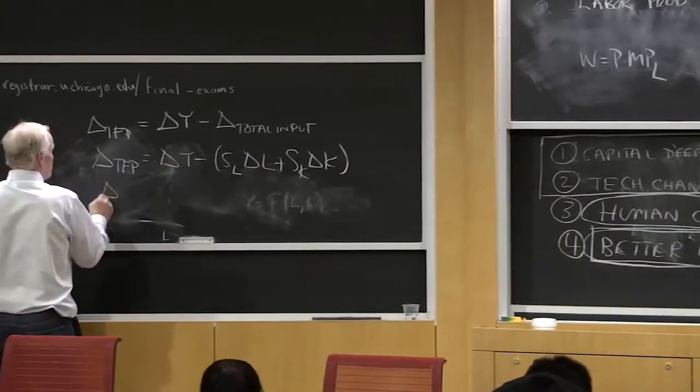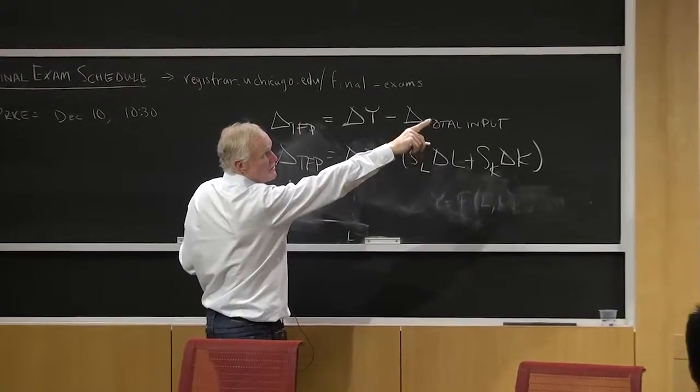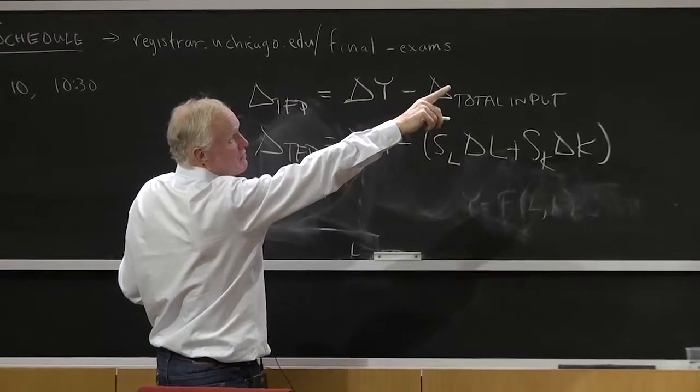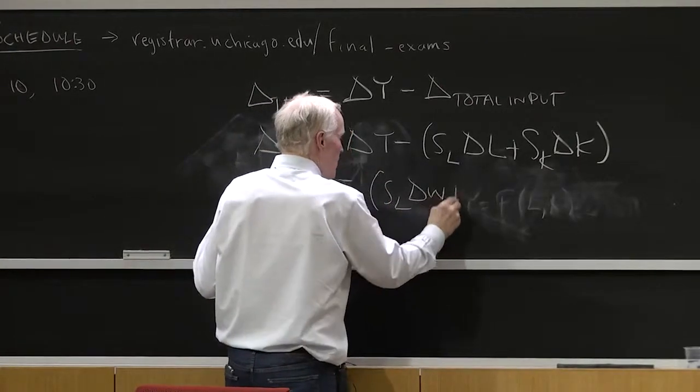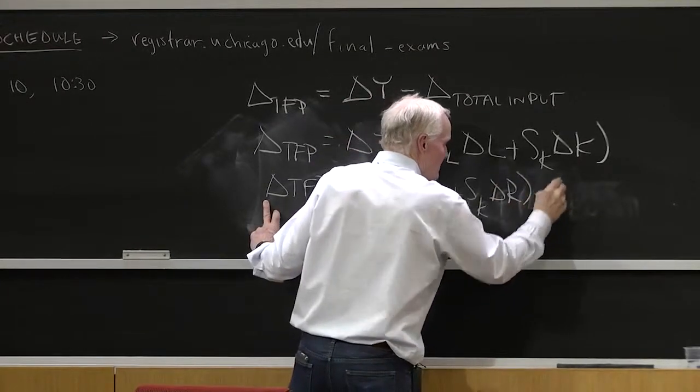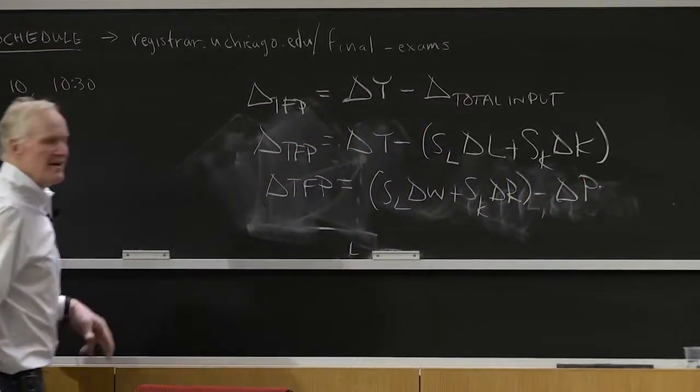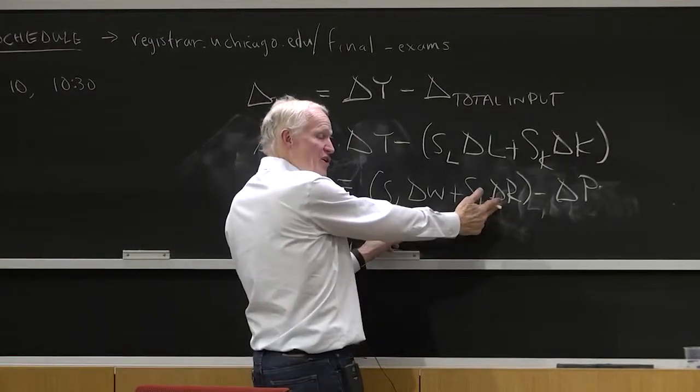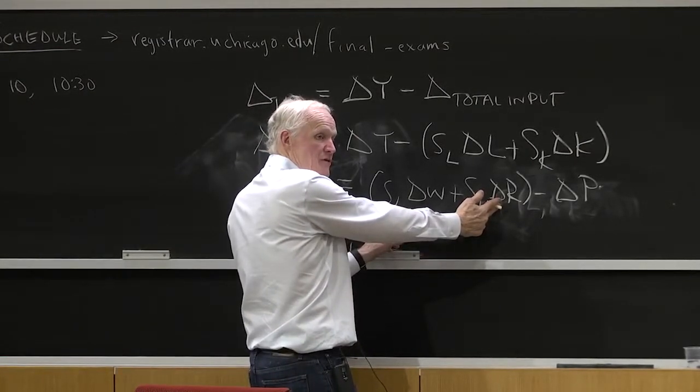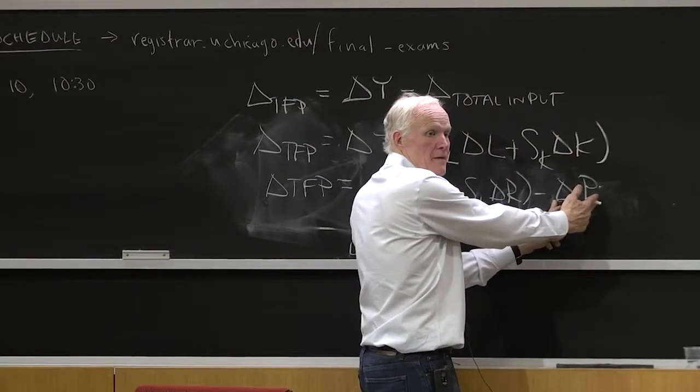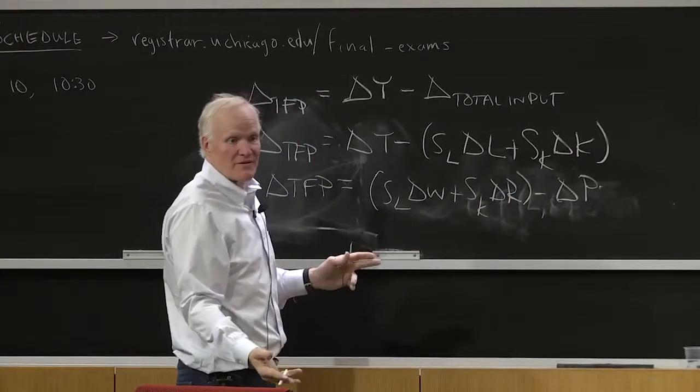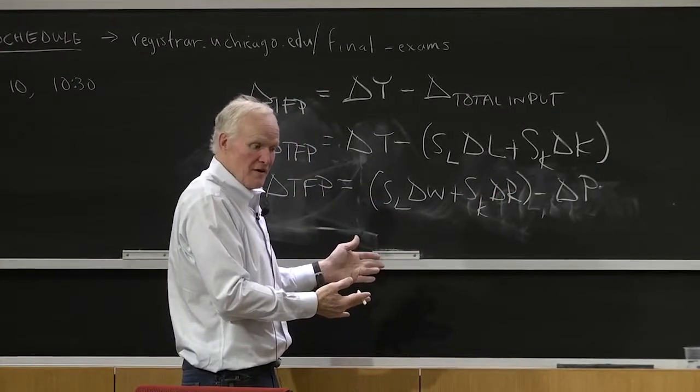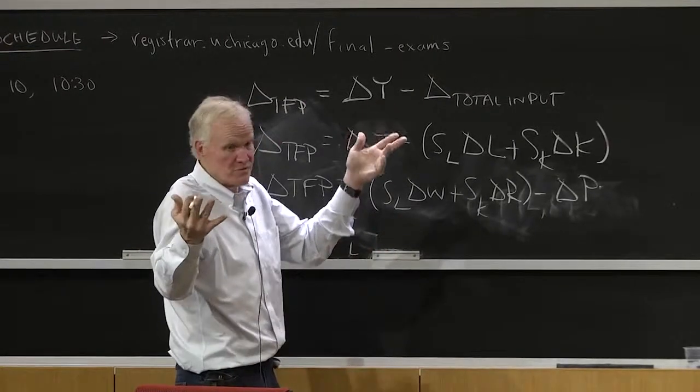Now, we can also measure total factor productivity on the price side. Just like we had two measures for labor productivity, we had real output per hour and we had the real wage, we can measure it here as SL delta W plus SK delta R minus delta P. Again, this is a residual. This is the predicted increase in the cost of output based on the cost of inputs. And this is how much output prices actually went up. So if output prices are going up slower than input prices, then we kind of got to be getting more productive. How are we getting more money to pay the inputs if the outputs are not going up in price as fast as the inputs? We must be getting more productive.